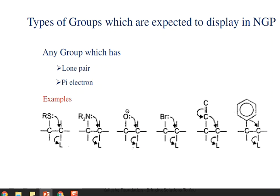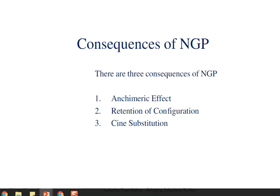Now let's look at which groups are expected to display neighboring group participation. As seen in the definition, groups which have either a lone pair of electrons or pi electrons are expected to participate. Examples include sulfur, amines (R₂N), oxygen, chlorine, bromine, double bonds with pi electrons, and phenyl groups. These are some examples which can take part in neighboring group participation.